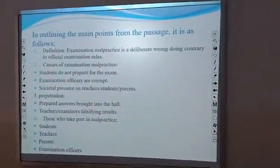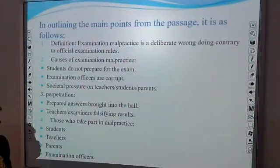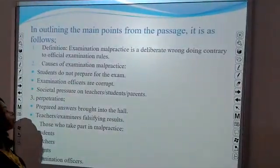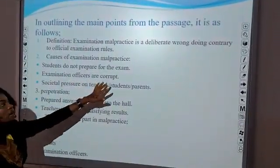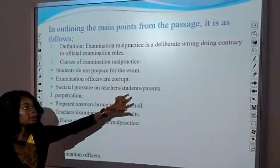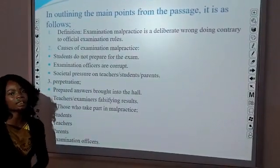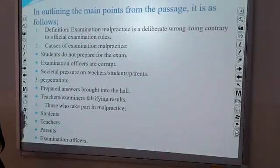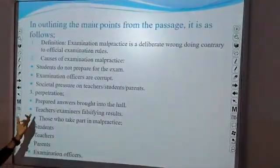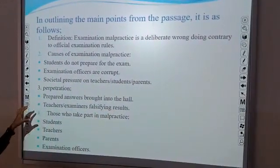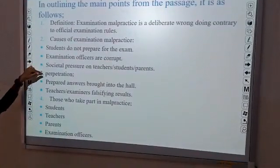In applying the main points from the passage, follow these steps. One — Definition: What is examination malpractice? It is stated that examination malpractice is a deliberate wrongdoing contrary to official examination rules. Two — Causes: Students do not prepare for the exam; examination officers are corrupt; there is societal pressure on teachers, students, and parents. Three — Perpetration, how it is done: Prepared answers are brought into the hall; teachers or examiners falsify results. These points are brought out as main ideas supporting the question.